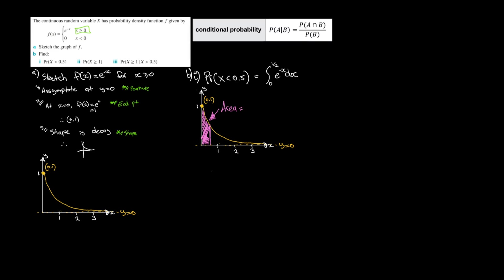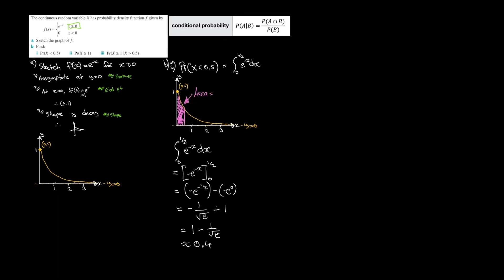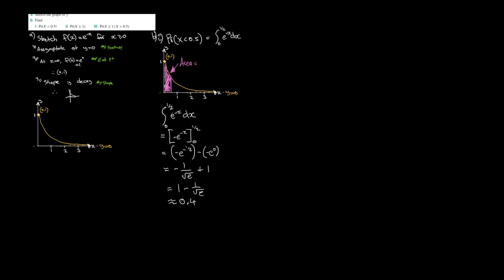I'd say the probability is equal to the integral from 0 to a half of the function, which is e to the negative x dx. So I'm going to evaluate that, and whatever pops out will be the probability. We're going to get that the probability is roughly equal to 0.4, 40%.